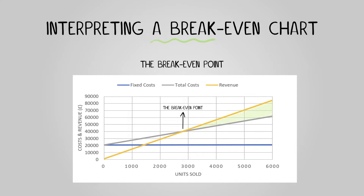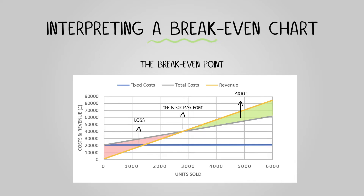Anything above the break-even point is profit, while anything below is a loss. We can identify the break-even point in both units sold or by money earned, depending on which axis we look along. Here, our break-even point in units would be 2,858 and our break-even point in money earned is £40,000.